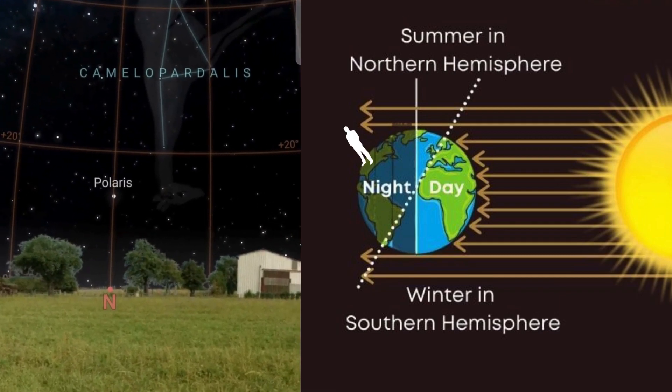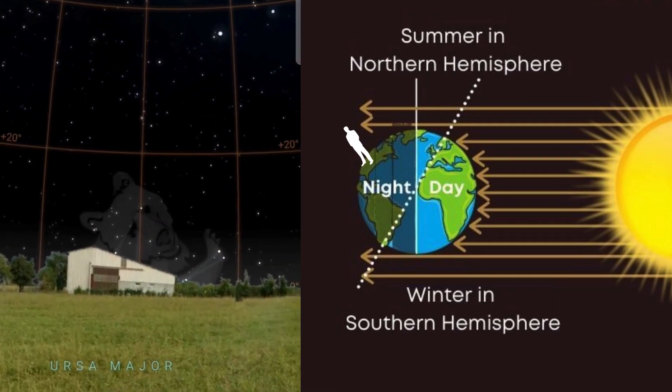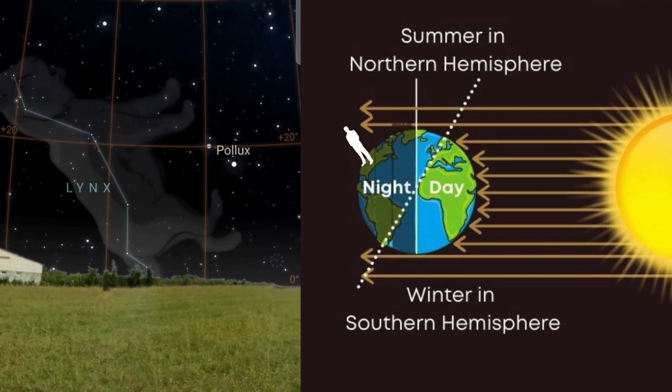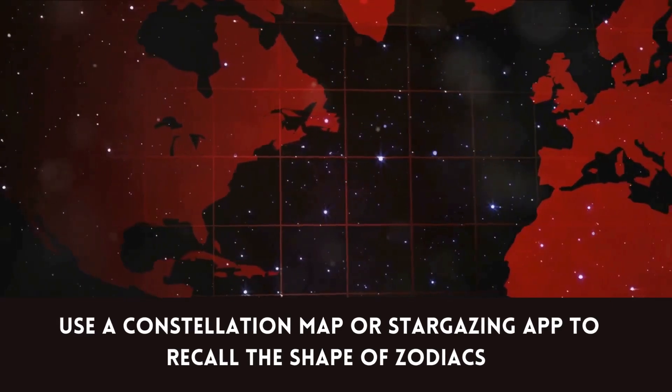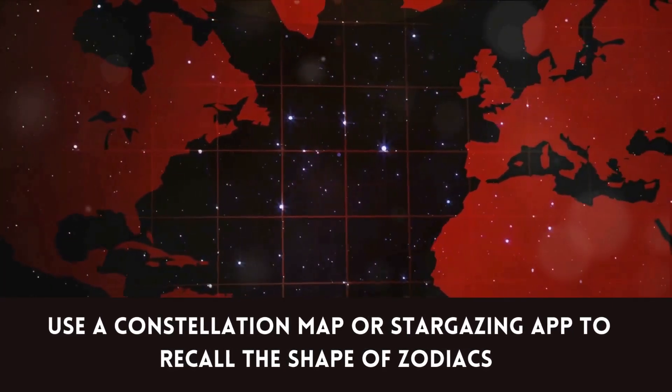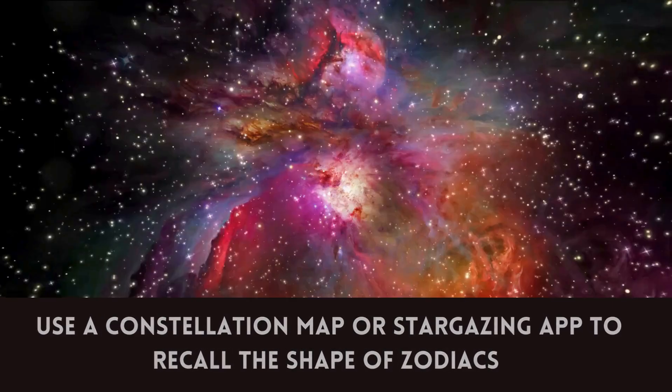If you live in the northern hemisphere and are stargazing during the summer season, you'll find the ecliptic plane slightly east of Polaris and vice versa. You can use a constellation map or a stargazing app if you can't recall the shapes of zodiac constellations.